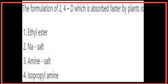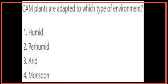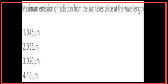The answer for the 2,4-D formulation is ethyl ester. CAM plants are adapted to an arid type of environment. Maximum emission of radiation from the sun takes place at the wavelength of 0.45 micrometers.